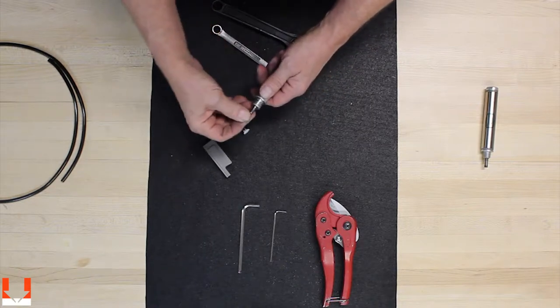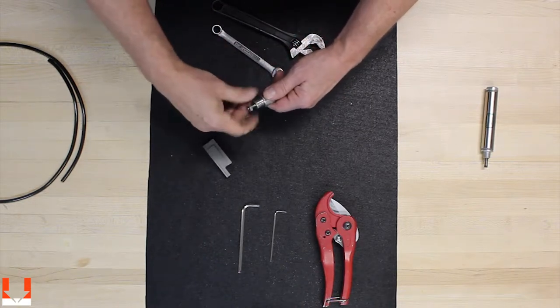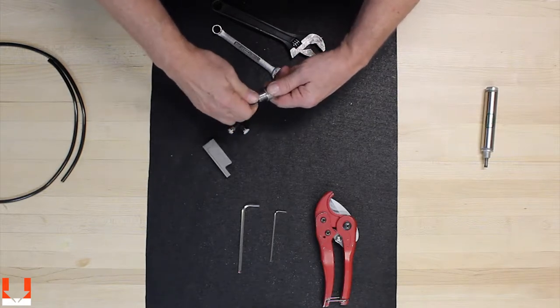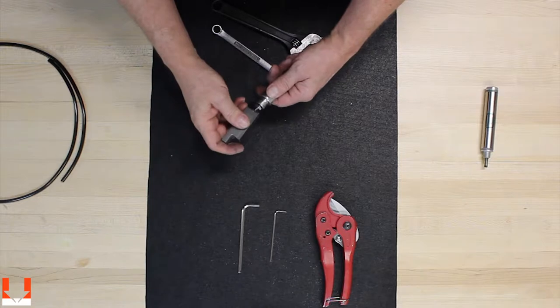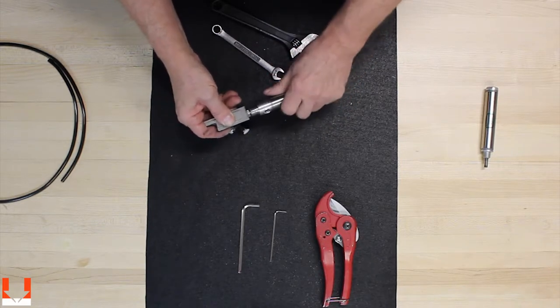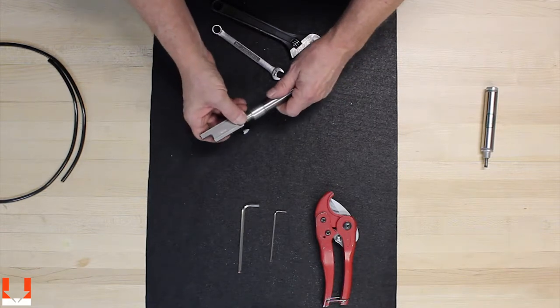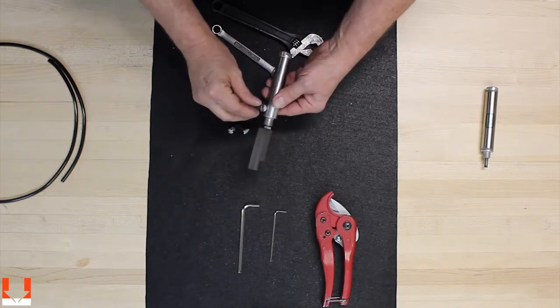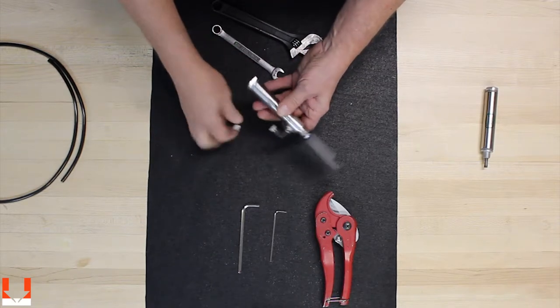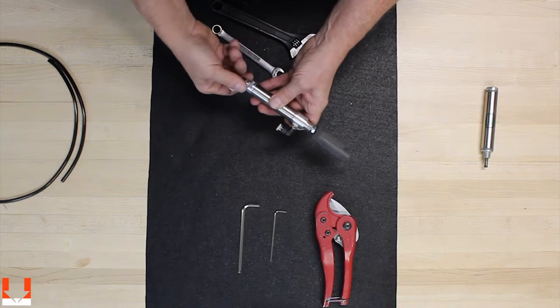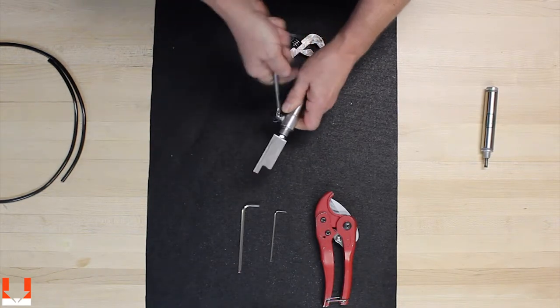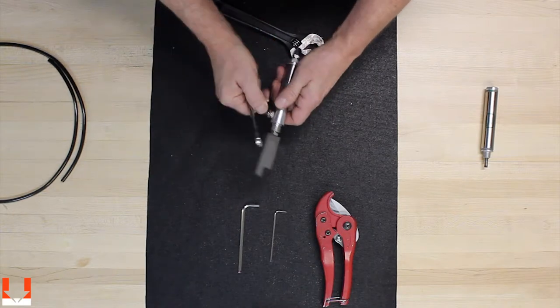So we're going to take our jam nut, run that all the way down to the bottom of the threads. Take our transfer block, spin that on. We're going to line up these fittings. We're going to put our air fittings on, which these air fittings come with their own sealant on them. Tighten up on those fittings. Not too tight. Just get them tightened up so they won't leak.